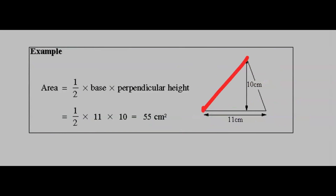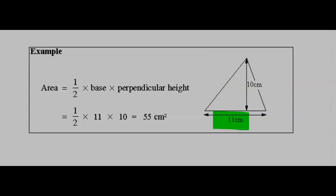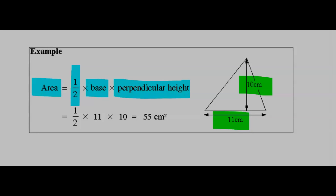For example, this given triangle has a base of 11 cm and a perpendicular height of 10 cm. Step 1: write out that the area of a triangle is half times the base times the perpendicular height. Step 2: substitute the base, which is 11, and the height, which is 10. The area of this triangle is 55 cm squared.